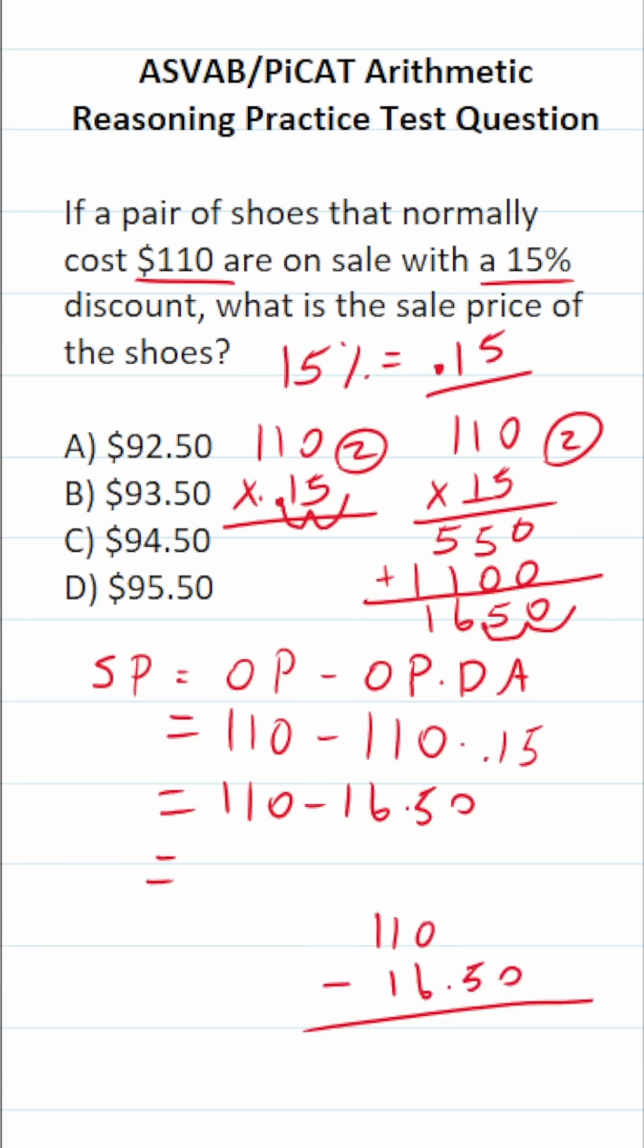To make this math a little bit easier, we'll add a decimal here and two 0 placeholders. 0 minus 0 is 0. 0 minus 5 we can't do. We can't borrow from this 0 here. So we're going to have to come all the way over here. This will become $0. This will become $10. Again, we're going to borrow one more time. This will become $9. And this will become $10. 10 minus 5 is 5. Drop down our decimal in place. 9 minus 6 is 3. And then we have 10 minus 1, which is 9.